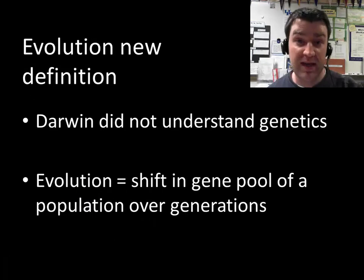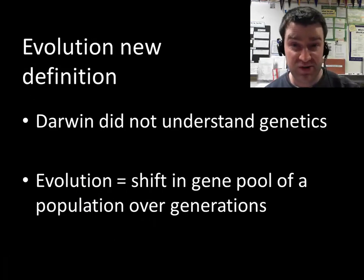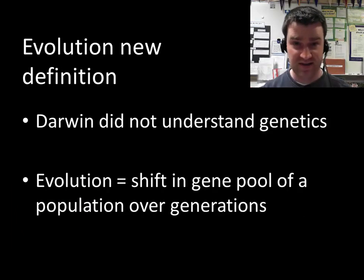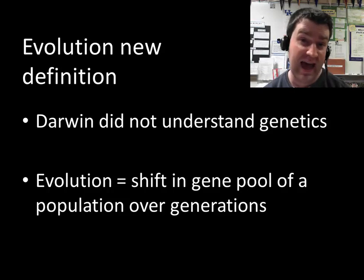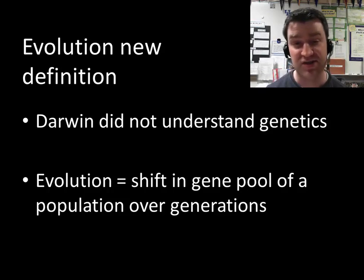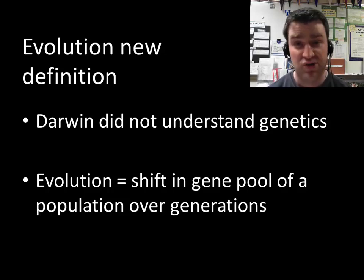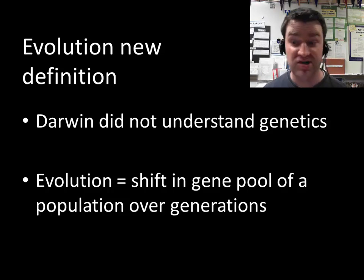In Darwin's conception of evolution, he had this sense that organisms tended to pass on the traits they possessed to their offspring, but he really had no idea how that happened. In the 20th century we combined evolutionary theory with a better understanding of genetics to redefine evolution as a shift in the gene pool of a population over the generations.